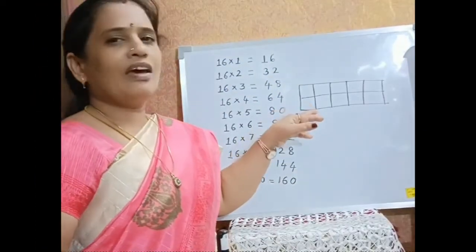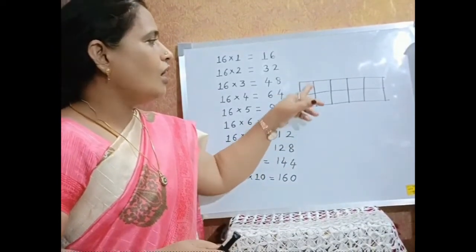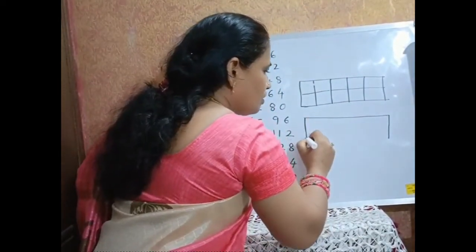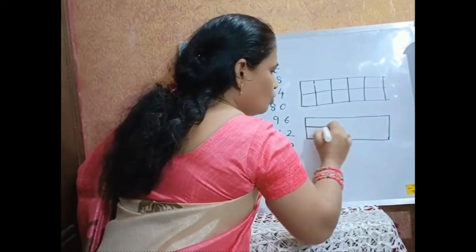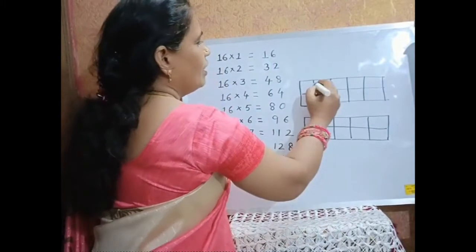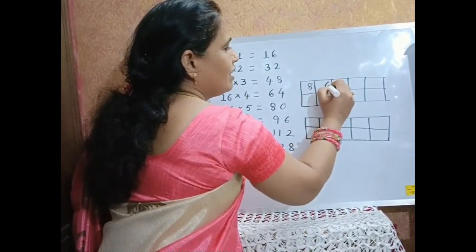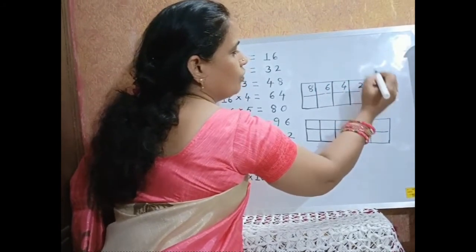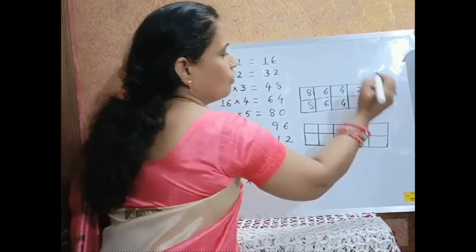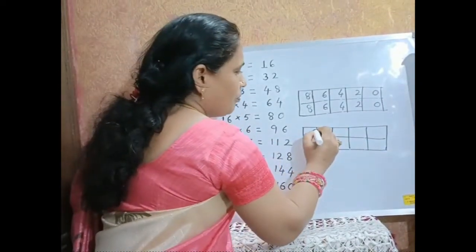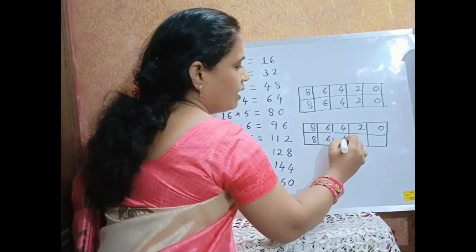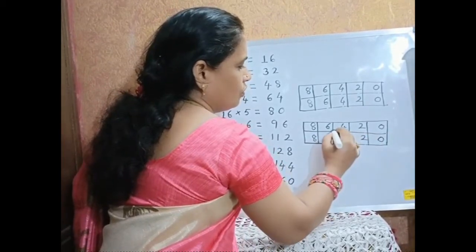The second method is our famous tick-to-grid method. Draw 2 rows and 5 columns, and another pass of 2 rows and 5 columns. Then write the numbers 8, 6, 4, 2, 0. Write the same numbers again: 8, 6, 4, 2, 0. Repeat once again: 8, 6, 4, 2, 0.